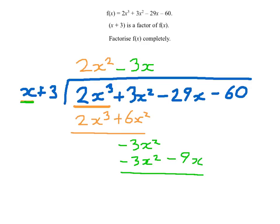I now do the simple subtraction again. Minus 3x squared minus minus 3x squared is 0. It always will be. But I also have minus 29x minus minus 9x. That's minus 29x plus 9x, which equals minus 20x.